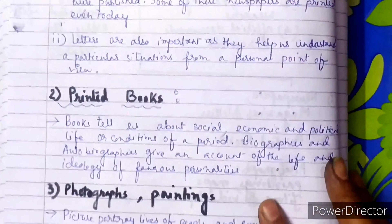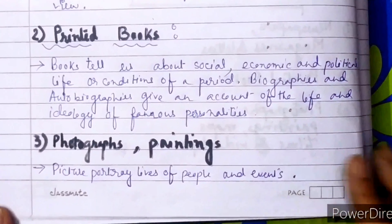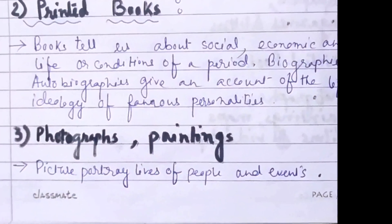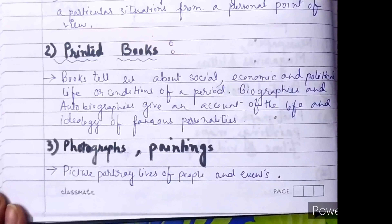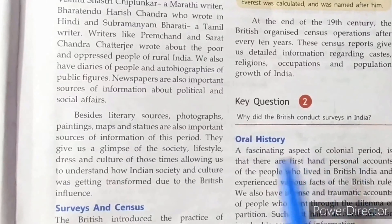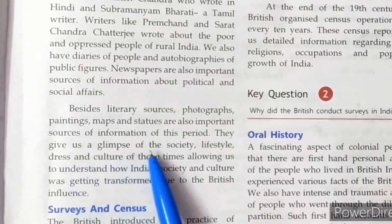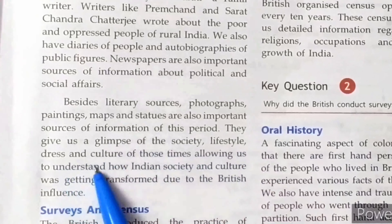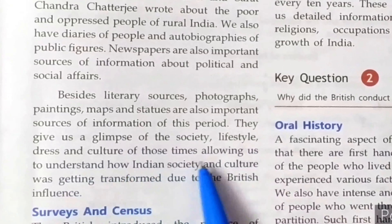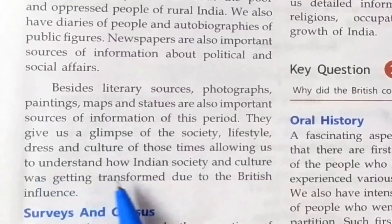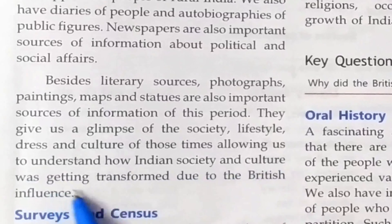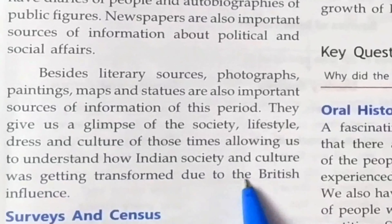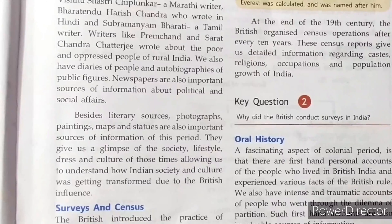The next portion is photographs and paintings. Pictures portray lives of people and events. All the literary sources give us a glimpse of the society, lifestyle, dress, and culture of those times, allowing us to understand how Indian society and culture was getting transformed due to British influence. Books, newspapers, and photographs described the changes that came from British influence very nicely.